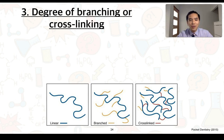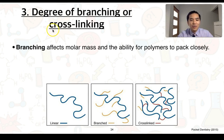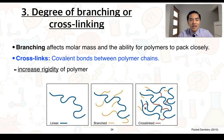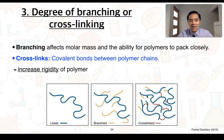Thirdly, we can consider the degree of branching or cross-linking. Branching, which we can see in yellow here, can affect the molar mass as well as the ability for the polymers to pack closely to one another. An example of this would be low-density versus high-density polyethylene. Cross-links, on the other hand, are covalent bonds that exist between polymer chains — we can see these in red in this diagram. Cross-links essentially increase the rigidity of the polymer because we have extremely strong interactions binding these polymer chains together. If we introduce a bit of light cross-linking, this can make polymers a bit more elastic as well as flexible.